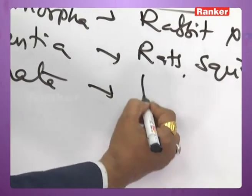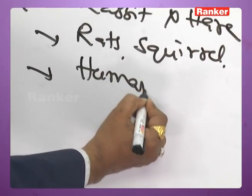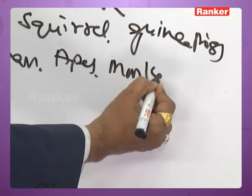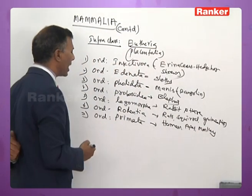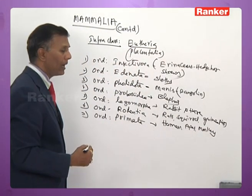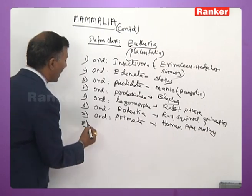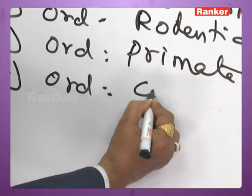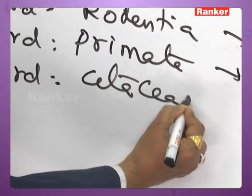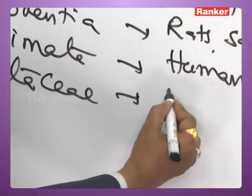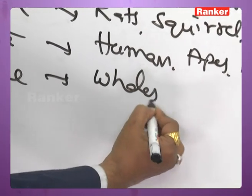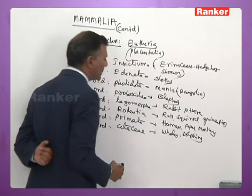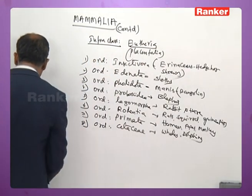Order Primata — includes human beings, apes, and monkeys. Order Cetacea — includes whales and dolphins.